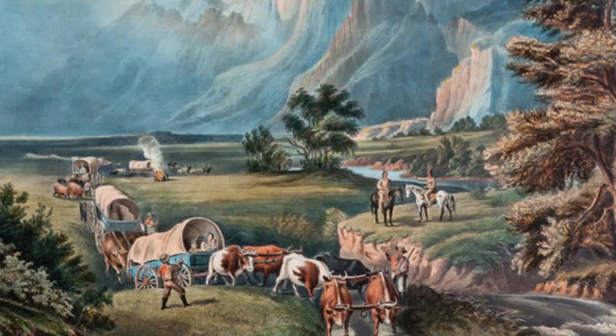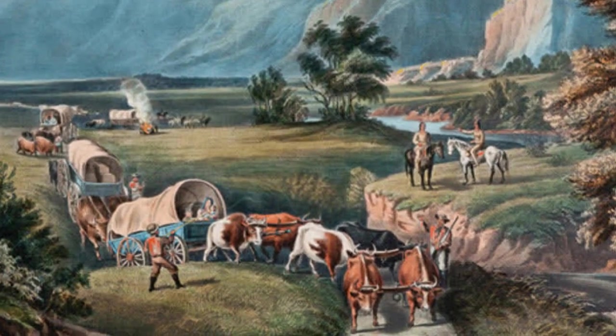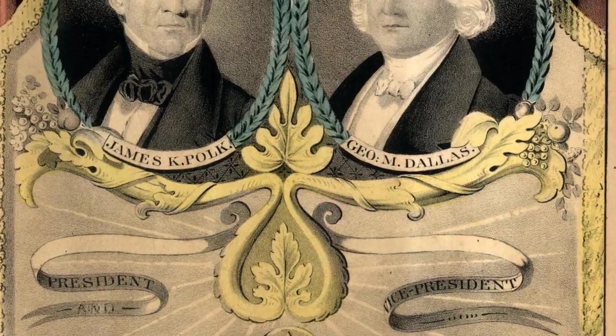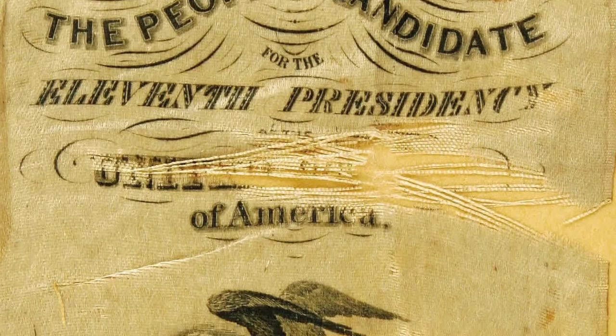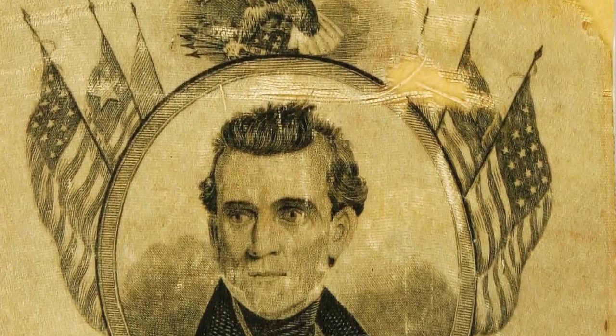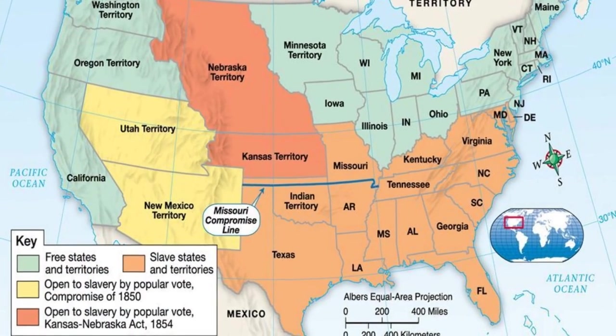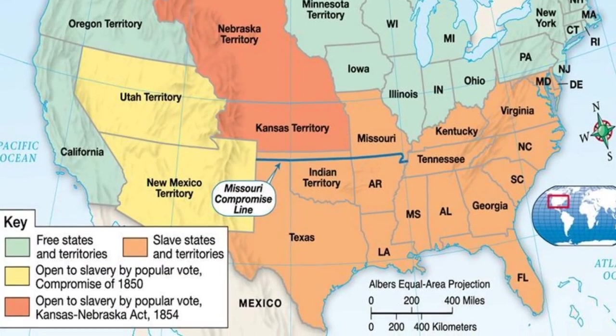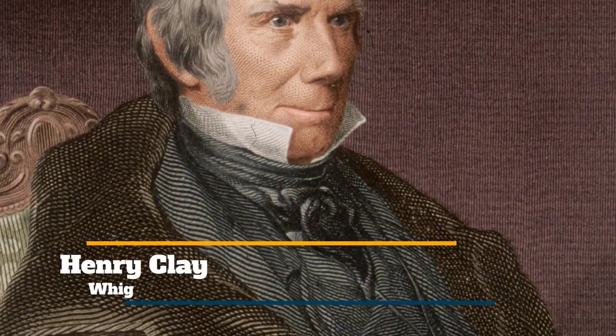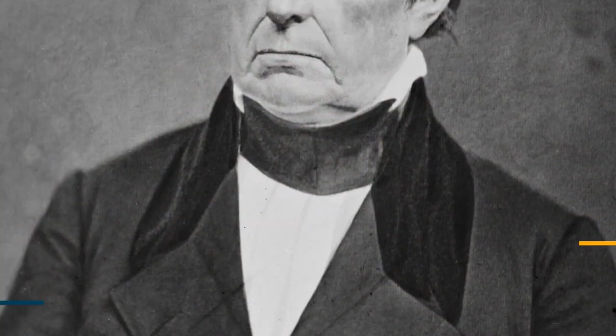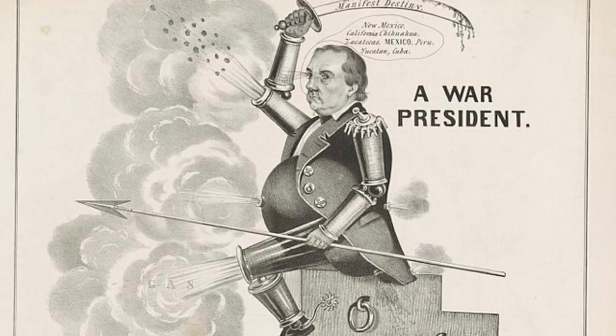Now, another important idea to understand is that manifest destiny was controversial. One of the great myths surrounding manifest destiny is that it was supported by the entire country, when in reality, there were many Americans who opposed it. Manifest destiny drew most of its support from Democrats, especially Southern Democrats, who viewed territorial expansion as a way of expanding the institution of slavery. Since most of the territory being added in the 1840s was below the Missouri Compromise line, the power of the South would increase as new territories such as Texas would be admitted as slave states. Many Northern Whigs, as well as abolitionists and anti-slavery forces, were typically opposed to manifest destiny. They were concerned about the expansion of slavery out West, and there were a number of people who saw events such as the Mexican-American War as immoral land grabs.